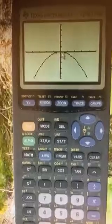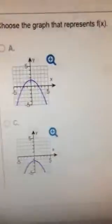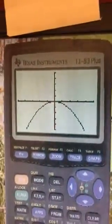And so notice how it goes through the origin. So we're going to come and we'll select the one. Notice this one that matches our graph. Okay.